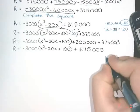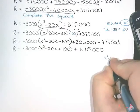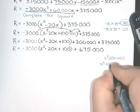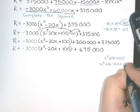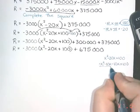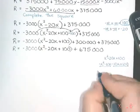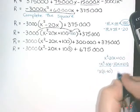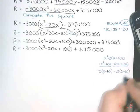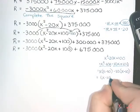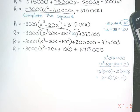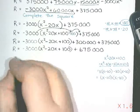In the margin I'll factor x squared minus 20x plus 100. That gives x squared minus 10x minus 10x plus 100. Out of the first part I take out an x, and from the second I take out a negative 10, leaving x minus 10 and x minus 10, which is (x minus 10) squared. So I'll replace x squared minus 20x plus 100 with (x minus 10) squared.